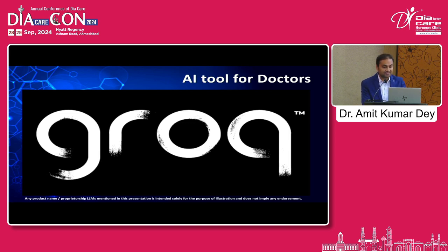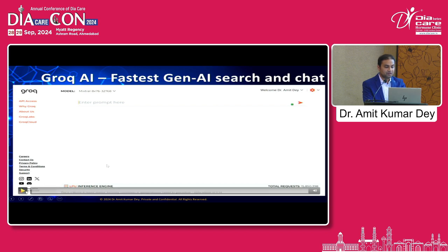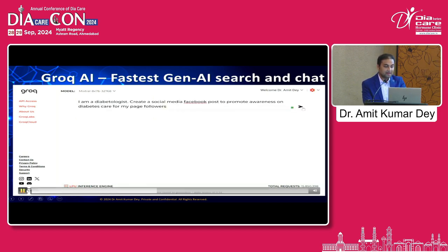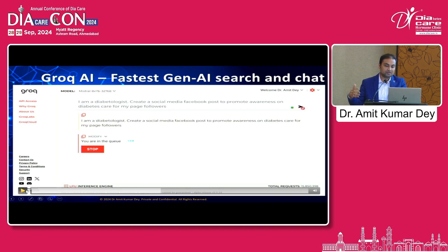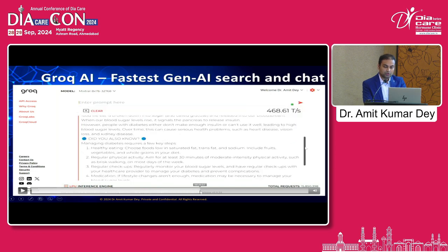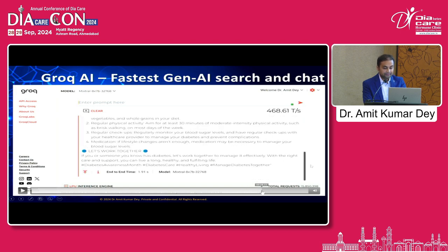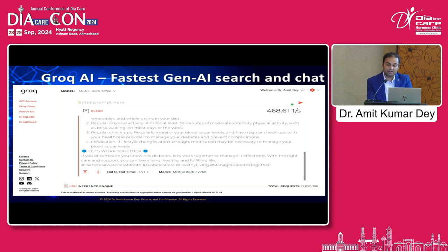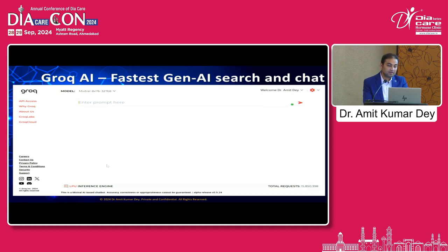There's another tool called Grok — it's very fast and gives very good responses in minutes. You can choose the model; for example, Mistral. You can prompt Grok: 'I'm a diabetologist, create a social media post to promote awareness on diabetes care for my page followers.' It does a good job of creating posts. You could use ChatGPT, Grok, or Perplexity — whichever you like. These posts are fantastic and you can customize further with your prompts. Prompting is so very important.